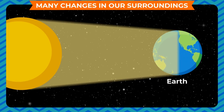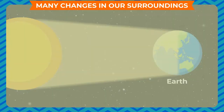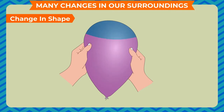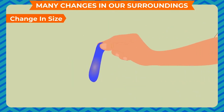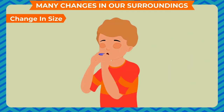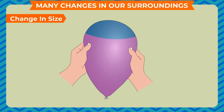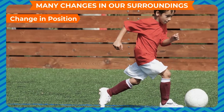These causes can bring about changes in the following properties of a substance. Change in shape: you can change the shape of a balloon by applying pressure. Change in size: a blown-up balloon increases in size when blowing air inside it; the size of the balloon varies with the amount of air entering into it. However, if we press the balloon or blow more air into it, it bursts.